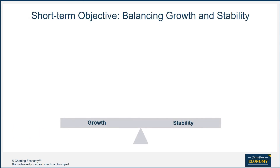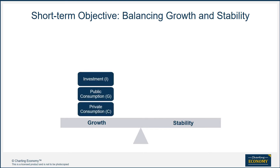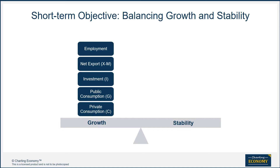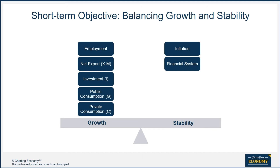The short-term objective of economic policy makers is to balance growth and stability. They can stimulate growth through four engines on the expenditure side: private consumption, public consumption, investment, and net export. Increasing employment is usually the immediate target for short-term growth stimulus policies. On the other side, policy makers have to watch out for inflation and other macroeconomic stability issues, such as the financial system's health, fiscal health, balance of payment, and the exchange rate.